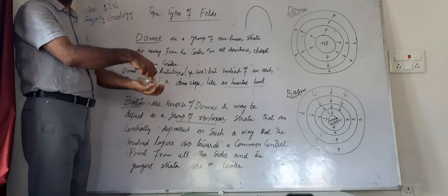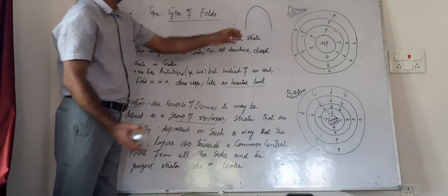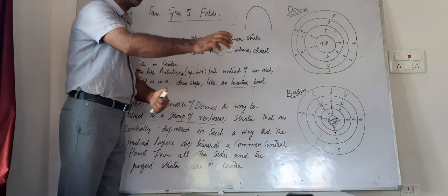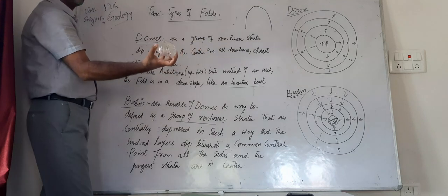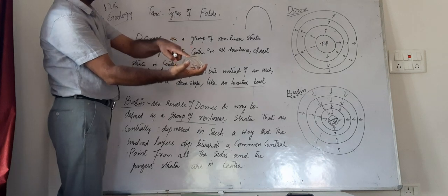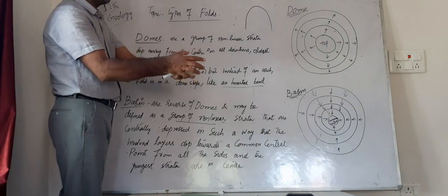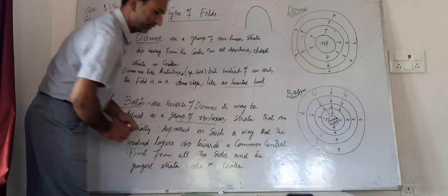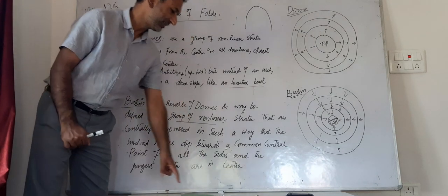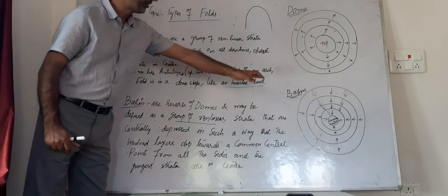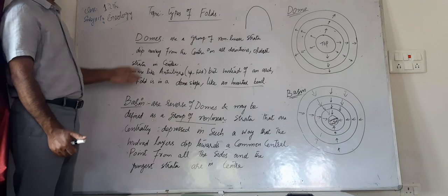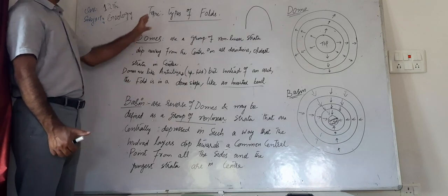This was a simple class in which we have understood the dome type of folding as well as the basin type of folding. This bowl provides us an easy understanding regarding the dome when it is in an inverted position, and when we put it in its original position on a table, it provides understanding regarding the basin type of fold in rocks. This was all regarding the domes and basin types of fold.